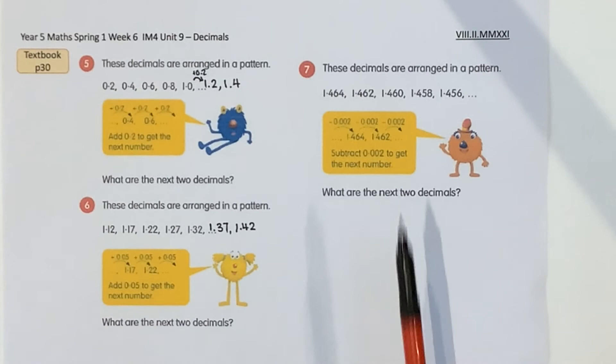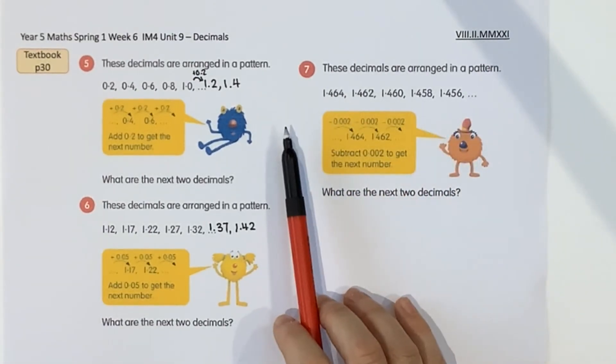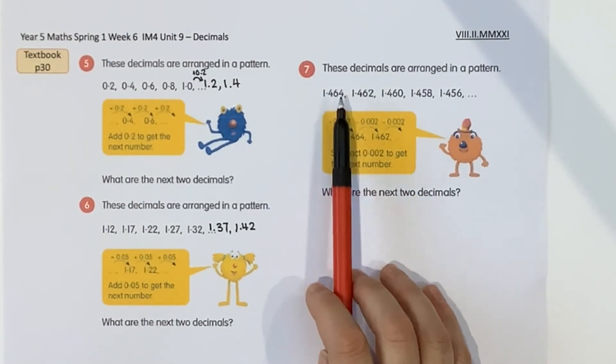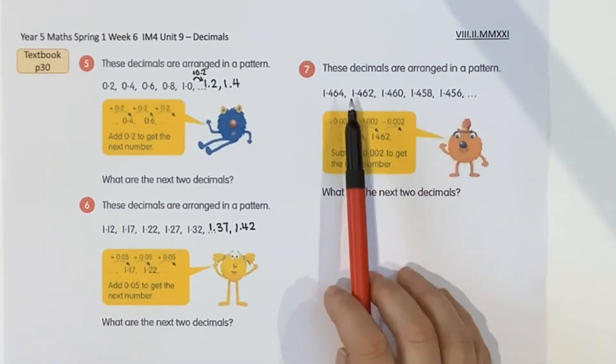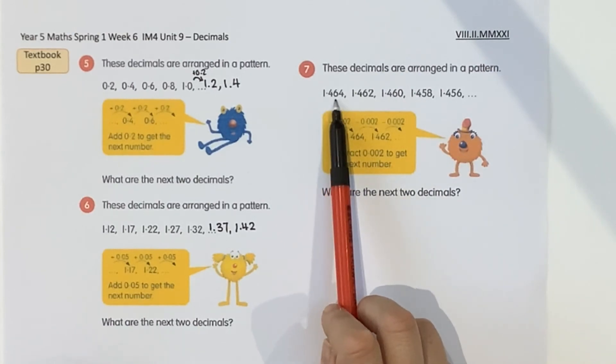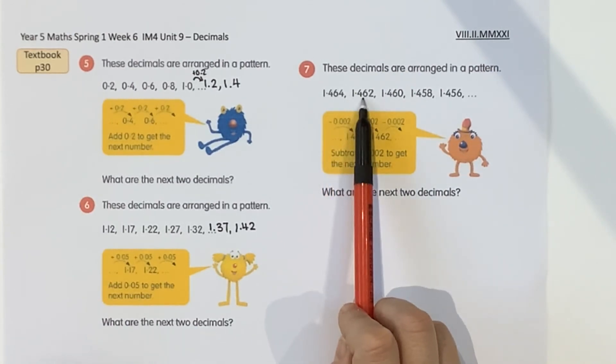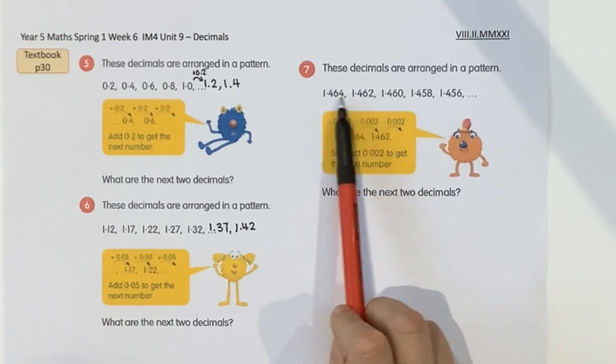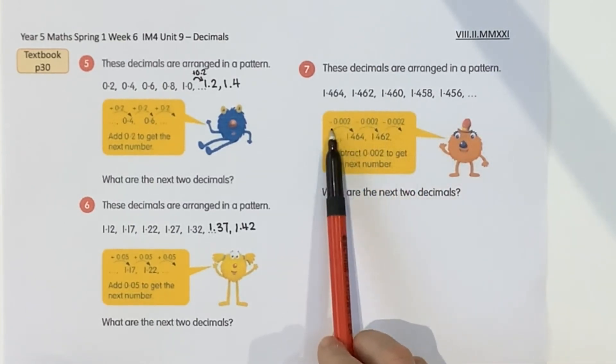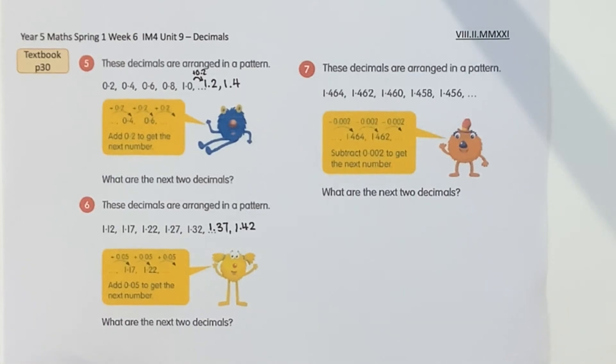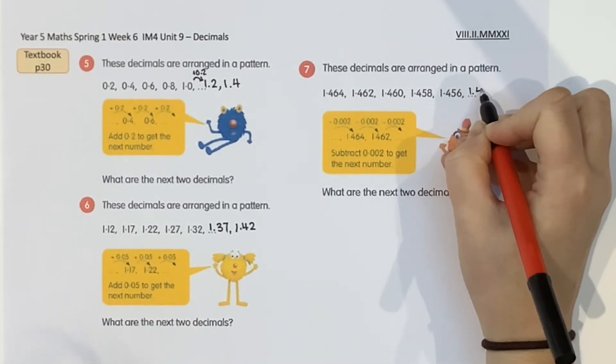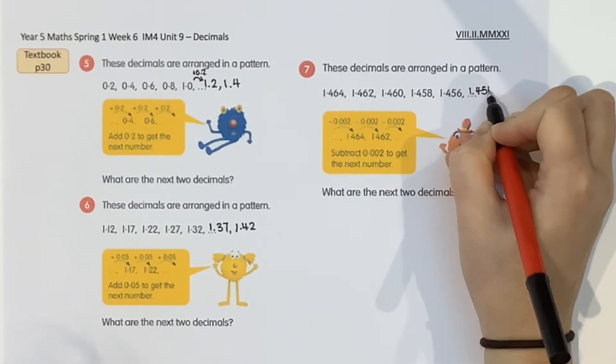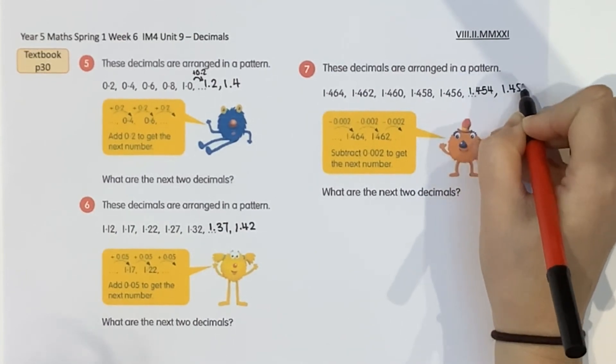Okay, and number 7. This time we're doing some thousandths changes and if you look very carefully, you can see that this time the numbers are getting smaller. So we must be taking something away each time. 1.464, 1.462, that's two thousandths less. So it's two thousandths less each time. So can you tell me what the next two decimals are going to be? Okay, so hopefully you said they're going to be 1.454 and 1.452.